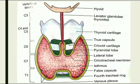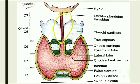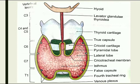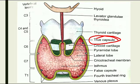The levator glandulae thyroidea goes to the pyramidal lobe, which is present on the isthmus, along with the right and left lobes and the thyroid cartilage. The thyroid gland consists of two capsules: a true capsule and a false capsule. The true capsule is the peripheral condensation of the connective tissue of the gland.